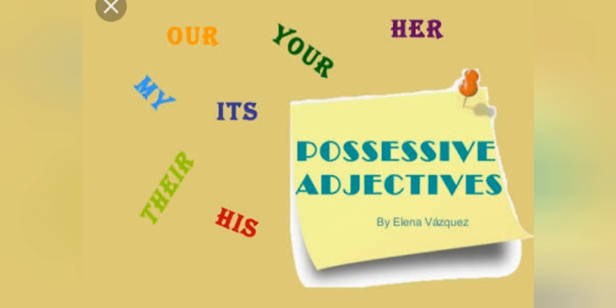Possessive adjectives kya hote hain? My, your, his, her, its, our, their — yeh sab possessive adjectives hain.